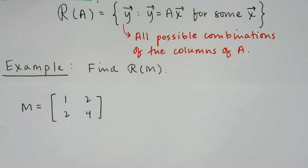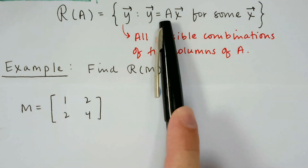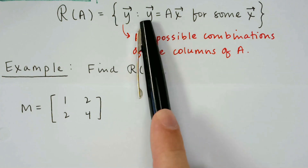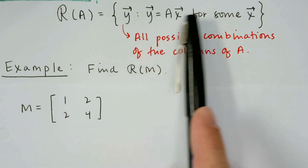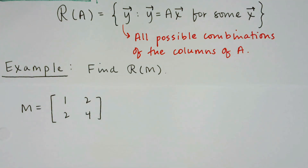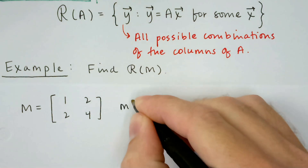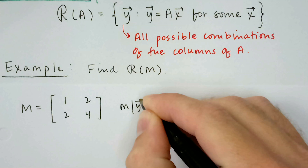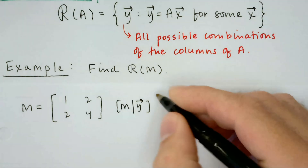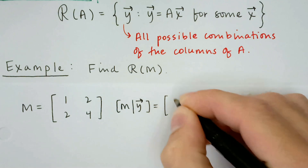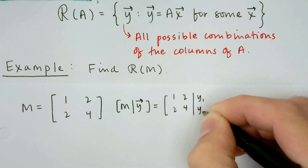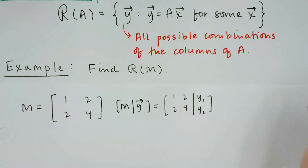What we're going to do is solve the system y = Ax. We're going to augment A with y and row reduce. If this is a true equation for some actual value x, we just need to make sure we have a consistent system. So I'm going to augment M with an arbitrary vector y — y₁ and y₂ — and row reduce to make sure we don't have no solution.